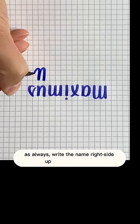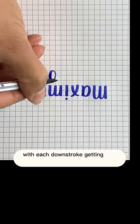Alright, check it out. As always, write the name right side up and upside down, with each downstroke getting one column.